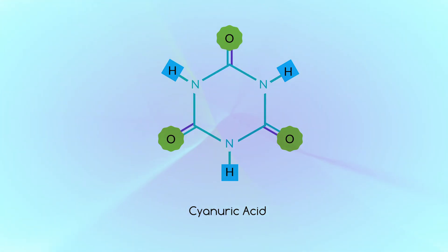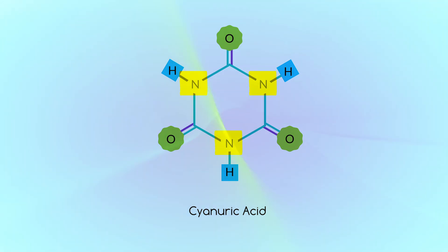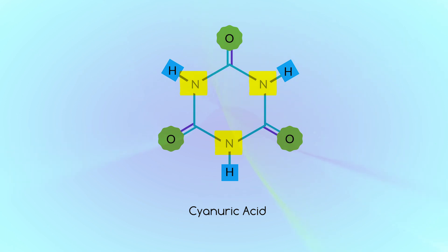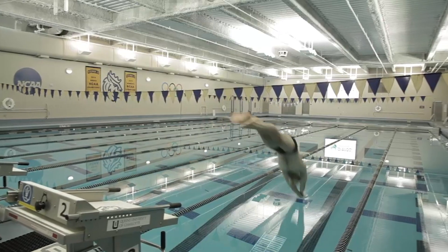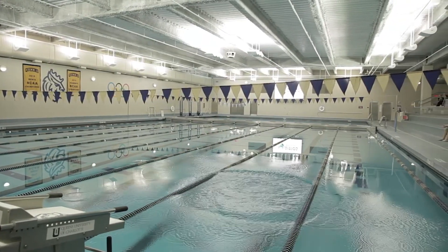CYA is a hexagon-shaped molecule with three places that chlorine can attach to it. These are weak nitrogen bonds that chlorine can attach to and detach from as needed. Since indoor pools don't have direct UV exposure from the sun, CYA stabilization is unnecessary.